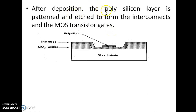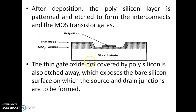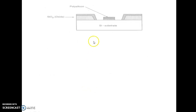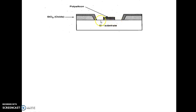After deposition, the polysilicon layer is patterned and etched to form the interconnect and MOS transistor gate. The thin oxide not covered by the polysilicon is also etched away, which exposes the bare silicon surface on which the source and drain junctions are to be formed.